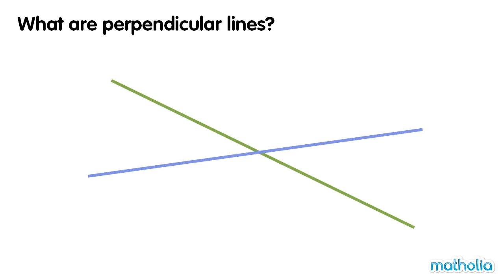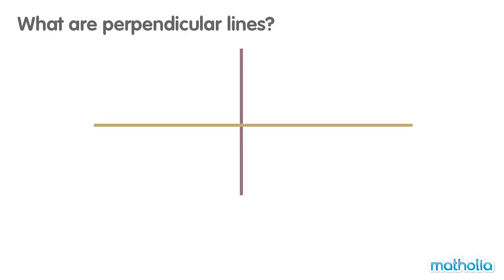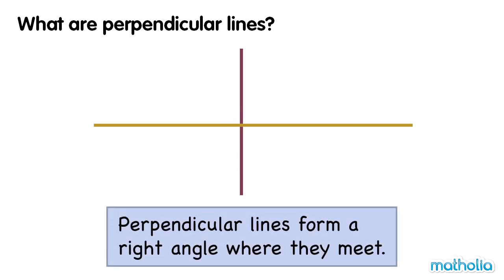What are perpendicular lines? When two straight lines cross or meet, they form angles. These two lines form right angles where they meet. Perpendicular lines form a right angle where they meet.